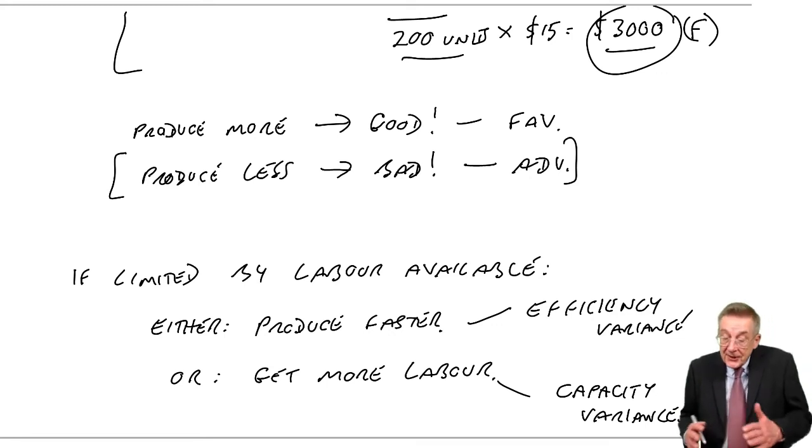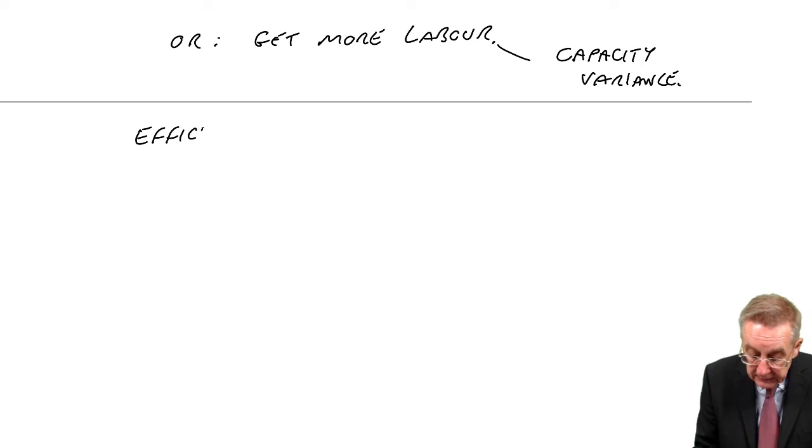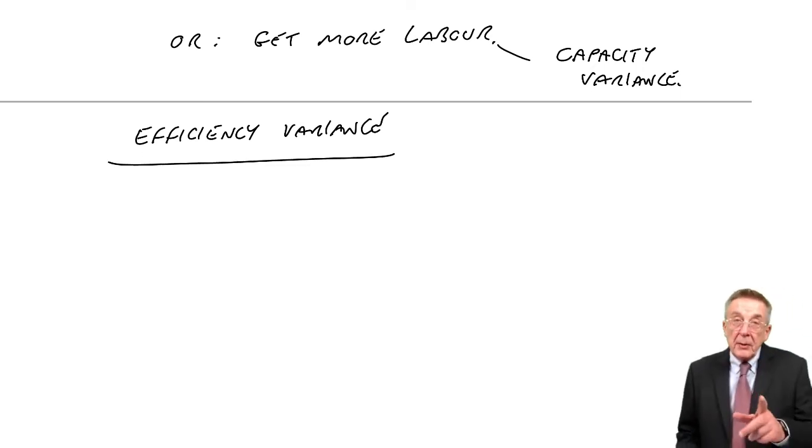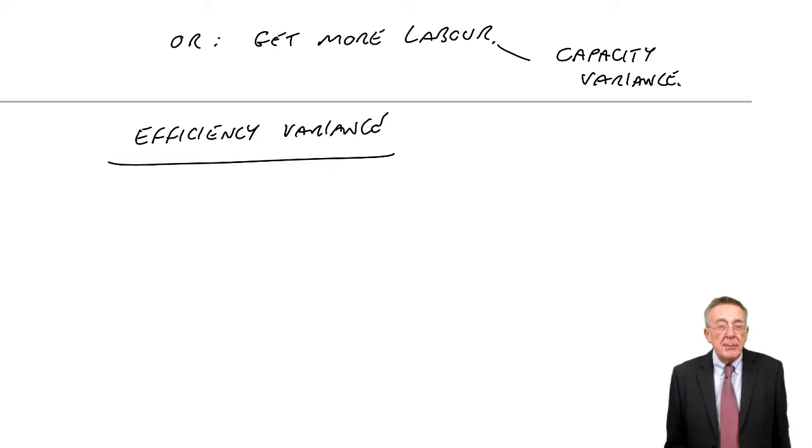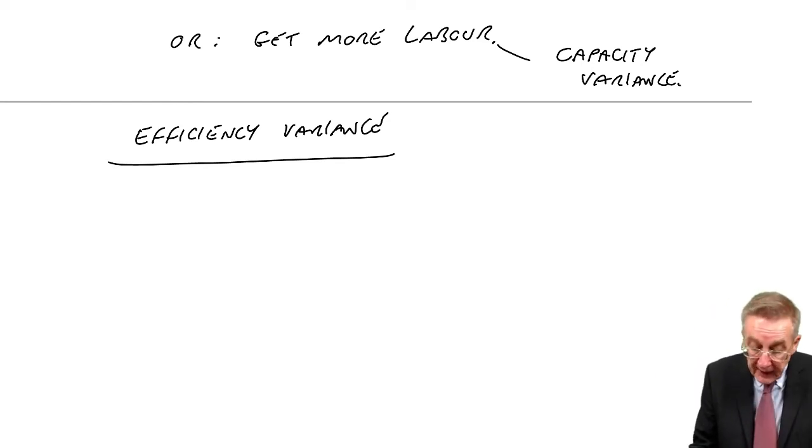And so, let's look at those and let's see, how did we manage to get 200 more units and therefore save 3,000? Was it because we got more labour? Or was it because they worked faster? Or was it a combination of the two? Let's look first of all at the efficiency variance. Now, in fact, we've already done this twice. If you remember, when we did the labour variances, we did check, did they work faster or slower? When we did the variable overheads variances, we checked, did they work faster or slower? And in exactly the same way, we'll do it for fixed overheads.